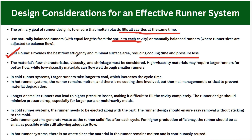Generally we use a full round runner shape. Material flow characteristics — viscosity and shrinkage — must be considered. High viscosity materials may require larger runners for better flow, while low viscosity materials can flow well through smaller runners. In a cold runner system, larger runners take longer to cool, which increases cycle time, so we generally use smaller runner sizes in cold runner systems.